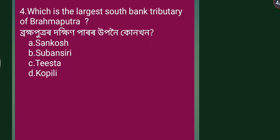Next question: Which is the largest south bank tributary of Brahmaputra? The answer: Subansiri and Dhansiri are north bank tributaries, and Kapili is the south bank tributary of Brahmaputra.